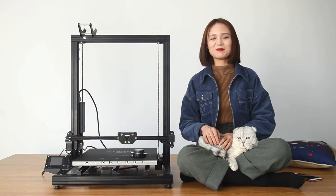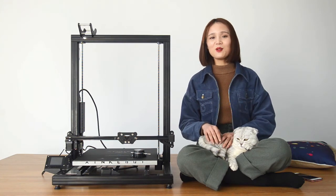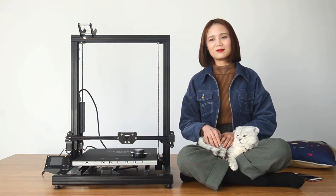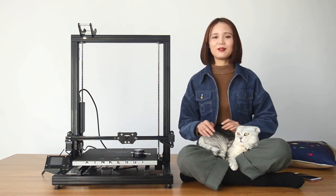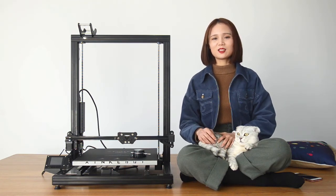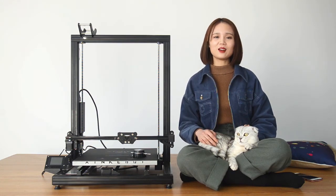Measure out the X and Y offsets and put them in the software. Print the same square with new offsets and see if the red and the black squares overlap well. If they do, you can keep them as they are now. If not, you may need to measure out the offsets again and modify them in the slicing software until the two squares overlap.